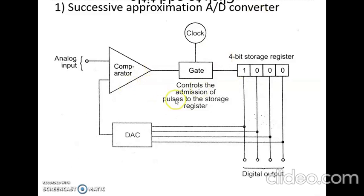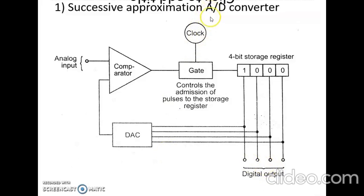As we can see in this diagram, the main components of the successive approximation A-to-D converter are: a comparator to which the analog input signal is given. The clock generates a regular sequence of pulses which are counted in a binary manner, and the resulting binary word is converted into an analog voltage by a DAC — that is, a digital-to-analog converter.